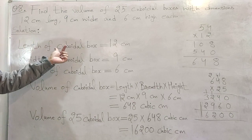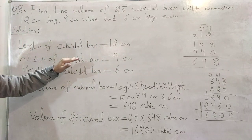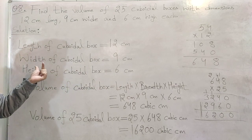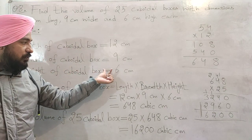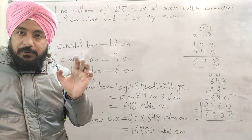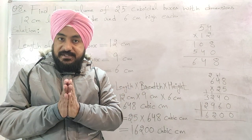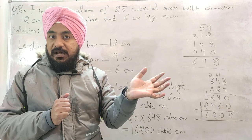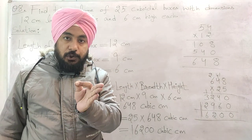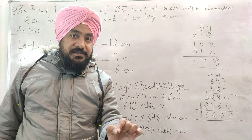The length of the cuboidal box is given as 12 cm, the width (breadth) of the cuboidal box is 9 cm, and the height of the cuboidal box is equal to 6 cm. Now we have 25 cuboidal boxes to find the volume of. First, we find the volume of one cuboidal box.